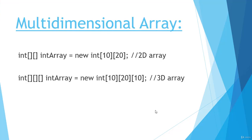This is the multi-dimensional array. In the previous video we created a one-dimensional array, and this is the multi-dimensional array. The first one is a 2D array and the second one is a 3D array. In a 1D array we give only one size, and in a 2D array we give two sizes. To create a 2D array, you type the data type, then two square brackets, then the name of the array — for example, int array equals to new int — and give two values. In a 3D array you create three square brackets and give three values.